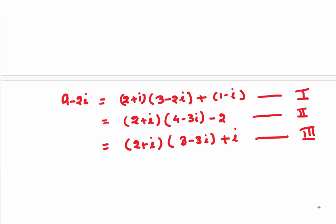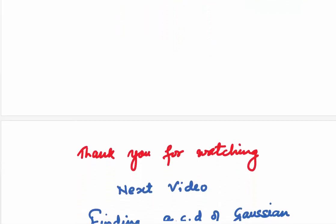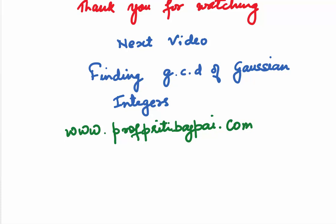So you have just seen that when 9 minus 2i is divided by 2 plus i, it can be written in three different forms. In the first case, gamma is 3 minus 2i and delta is 1 minus i. In the second case, gamma is 4 minus 3i and delta is minus 2. In the third case, gamma is 3 minus 3i and delta is i. So in the Gaussian division algorithm, when we divide alpha by beta, the Gaussian integers gamma and delta are not unique. Our next video will be on finding the GCD of Gaussian integers. For detailed notes and practice problems, visit profprithibajpay.com.